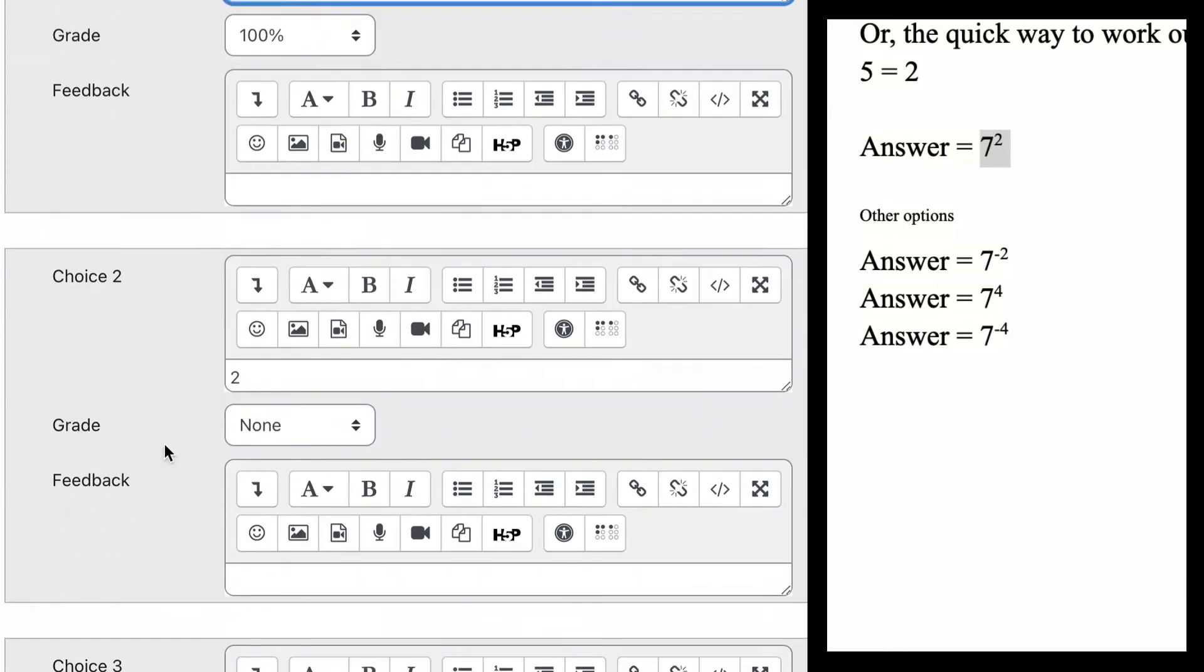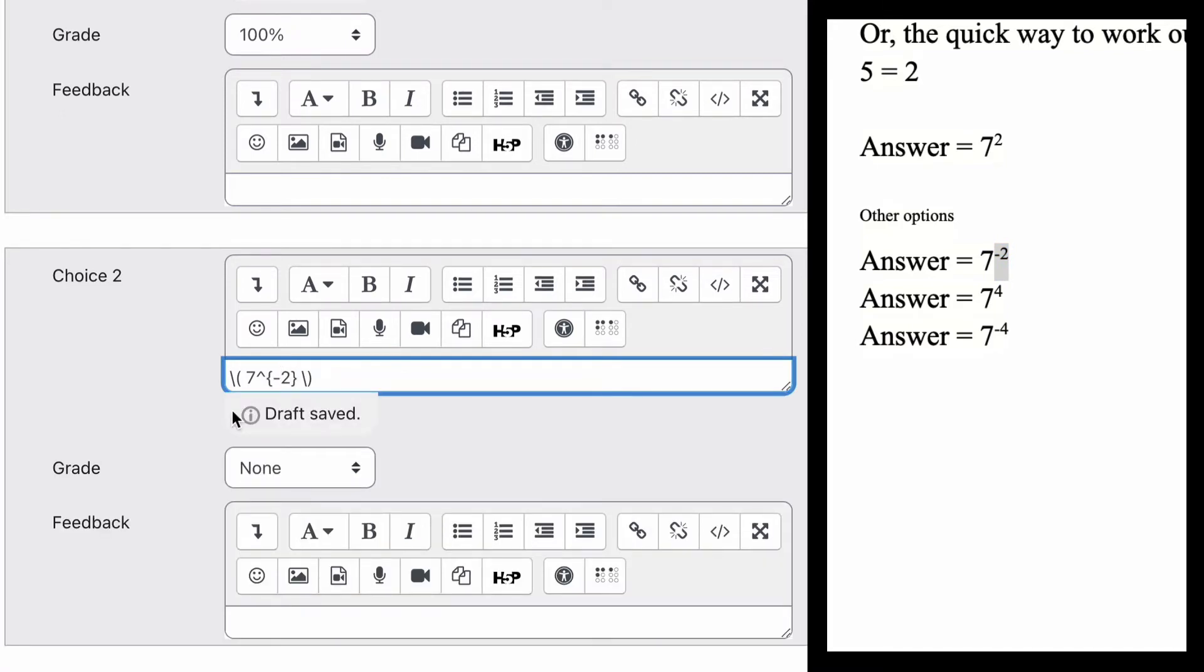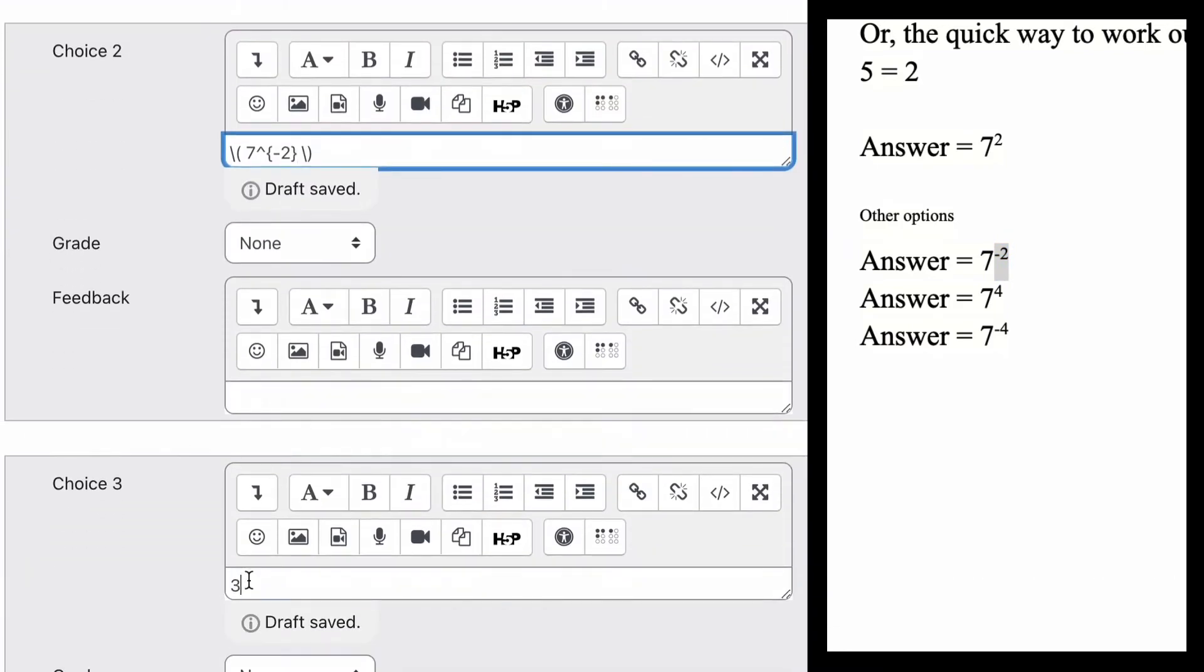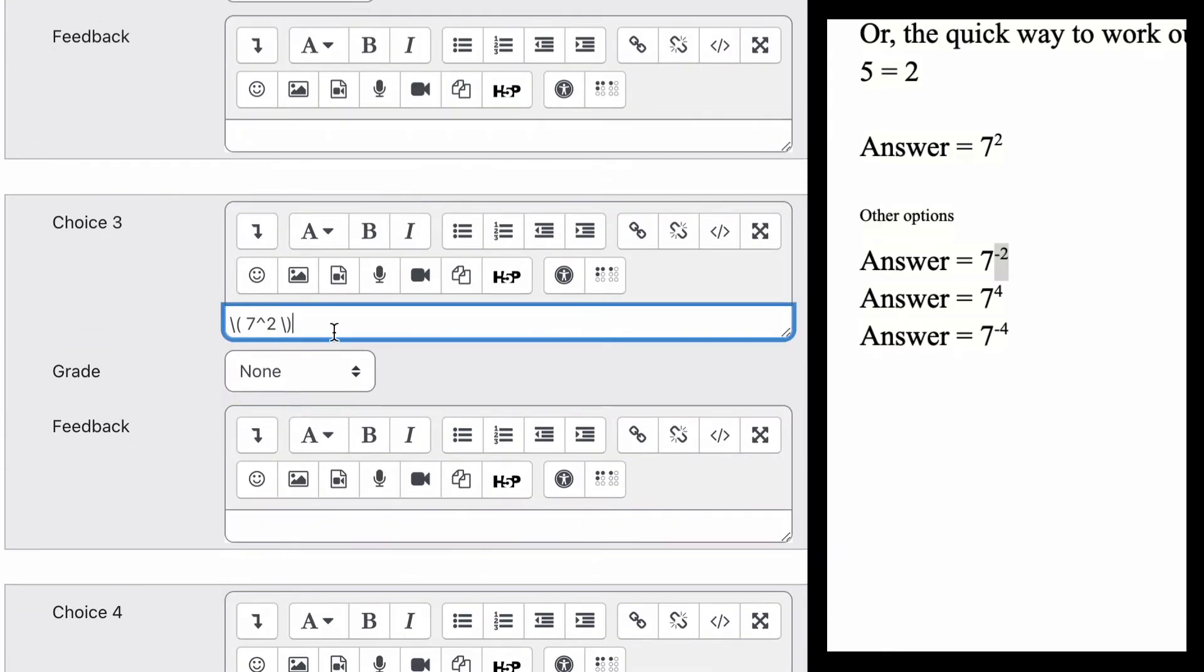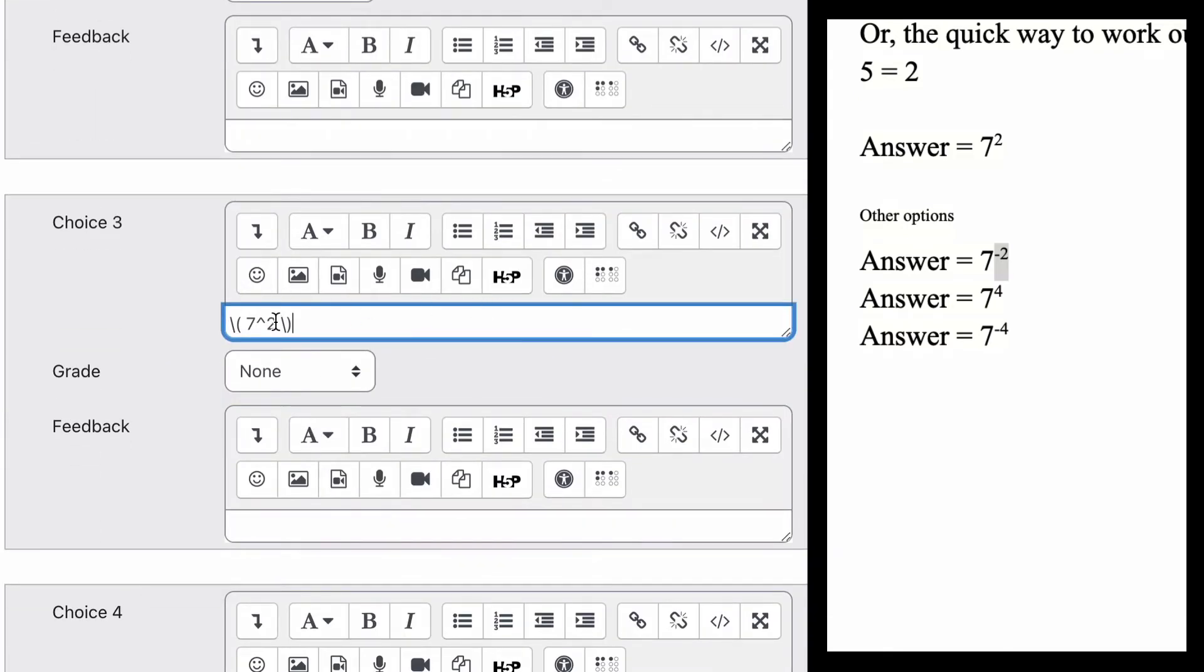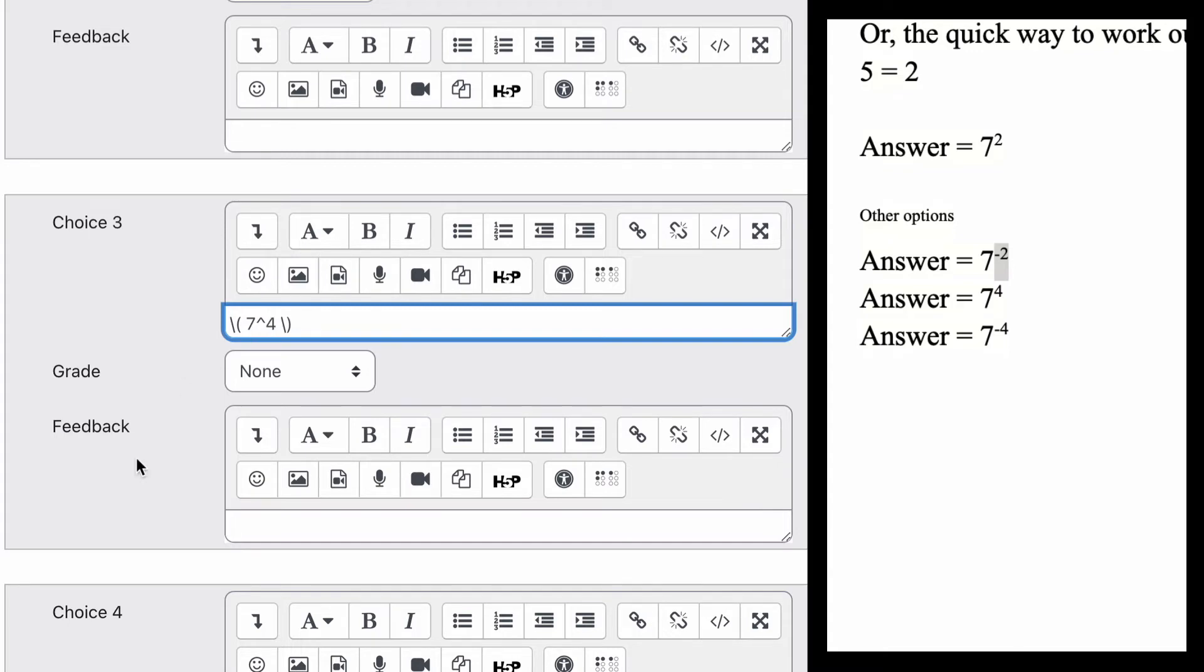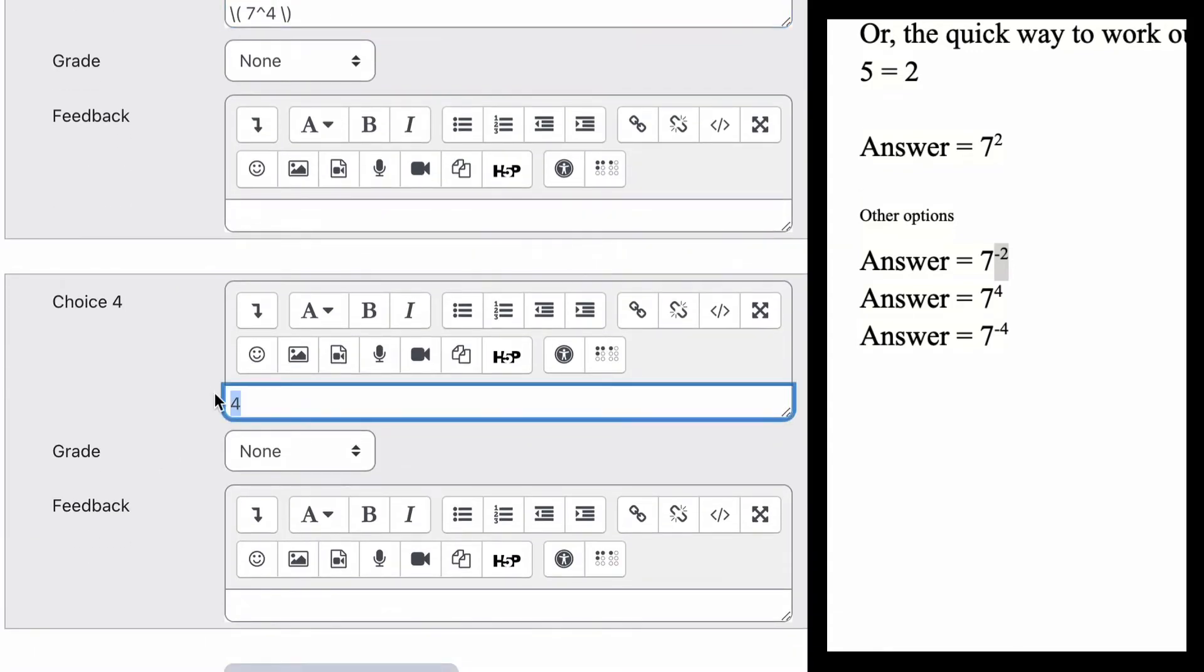So we're just going to copy that. Move that down to our other answers. And these are our answers that are incorrect. And so we've got an incorrect answer for our second one here. Is 7 to the minus 2. So remember. We put the bracket in. Minus in the other bracket. Go down to our third answer. Which is. 7 to the power of 4. 7 cubed. Then our last one is. Minus 4. So we just put in our bracket. Minus 4. Bracket. Get rid of the 2.